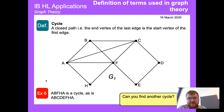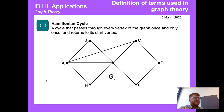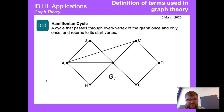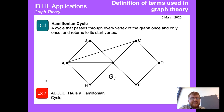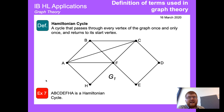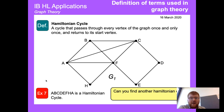There are many different cycles — F-C-D-E-F is a cycle, for instance. A Hamiltonian cycle is a very special kind: it passes through every vertex of the graph exactly once and returns to its start vertex. So A-B-C-D-E-F-H-A is a Hamiltonian cycle since we visit every node once and return to A. A-B-C-D-E-F-B-A would not be Hamiltonian because H is missed and B is visited twice.